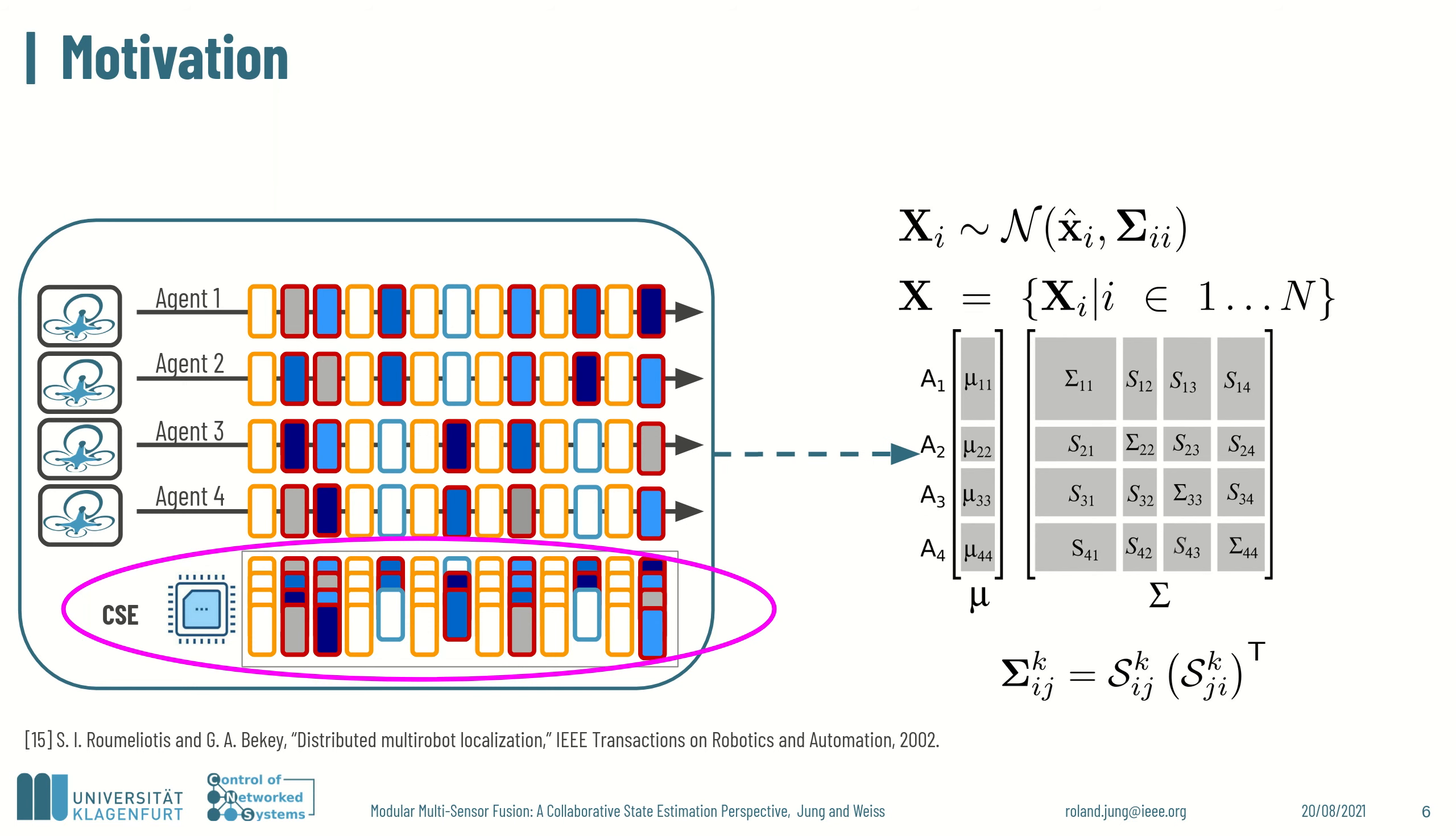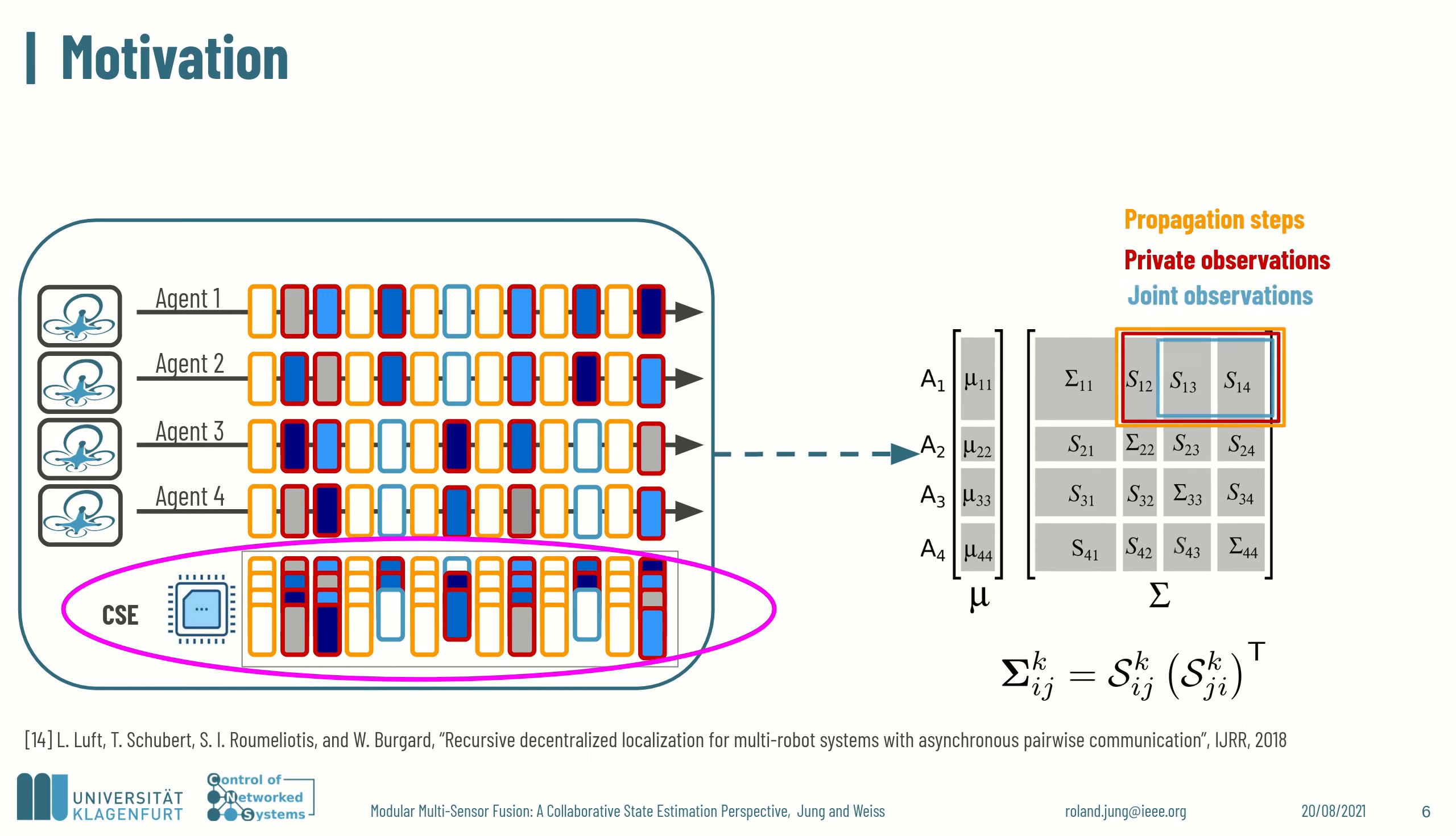In addition, Luft et al. proposed to apply approximations that allow for both isolated propagations and updates, but the cross-covariance factors have to be corrected in each filter step. Using these approximations, only agents that participate in joint observations directly benefit from them. While using a centralized equivalence strategy, all correlated agents would obtain corrections. To further reduce the maintenance effort, we proposed previously a buffering scheme that requires maintenance only in the moment of joint observations.